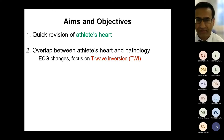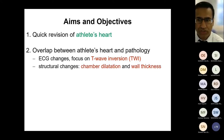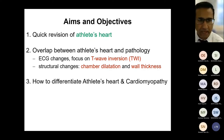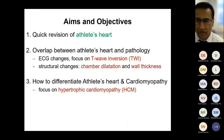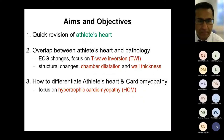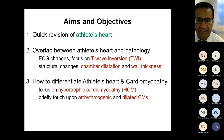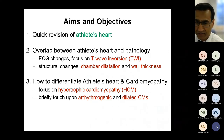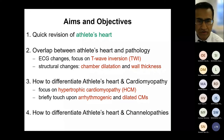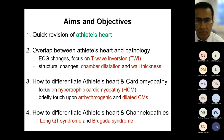We'll look at ECG changes with a focus on T-wave inversion because this is the most common change we come across in day-to-day clinical practice, but we'll also look at structural changes that can overlap between athlete's heart and pathological cardiac conditions such as chamber dilatation and increased wall thickness. I'm then going to talk about how to differentiate athlete's heart from cardiomyopathy, focusing predominantly on hypertrophic cardiomyopathy, but also briefly touching upon arrhythmogenic and dilated cardiomyopathy, and finally the overlap with ion channel disorders including long QT syndrome and Brugada syndrome.